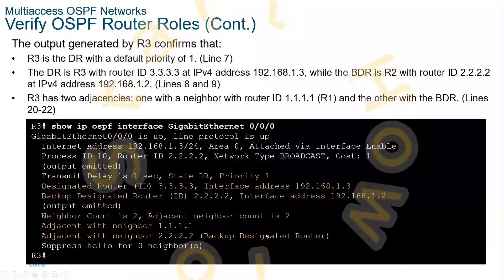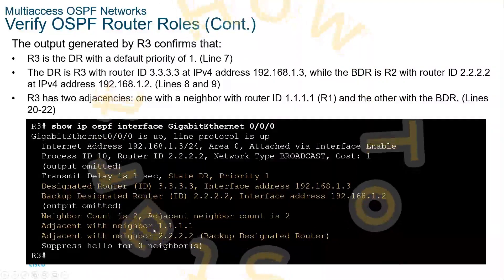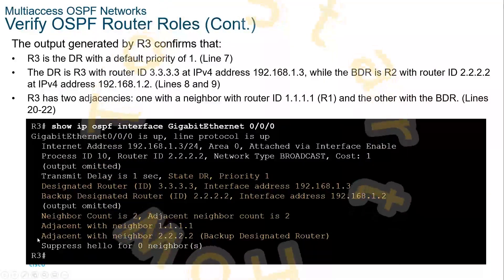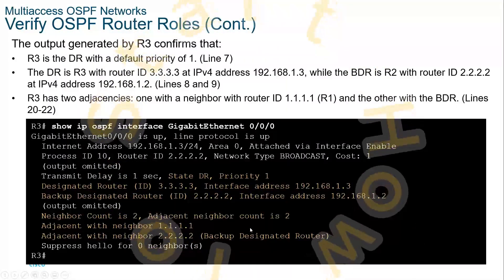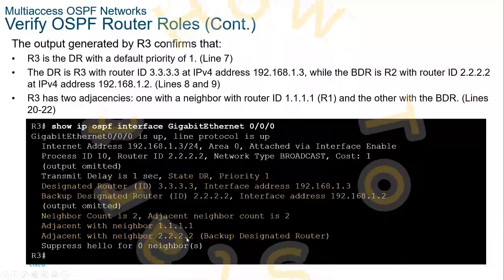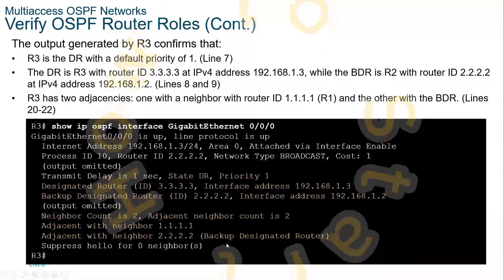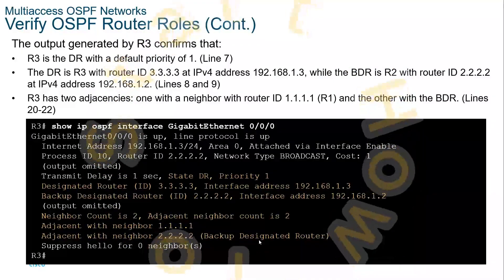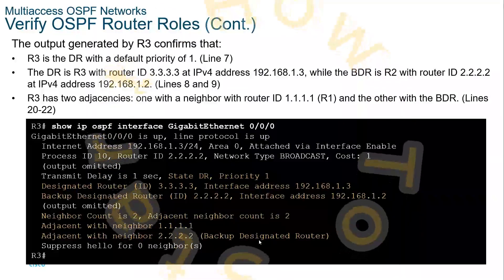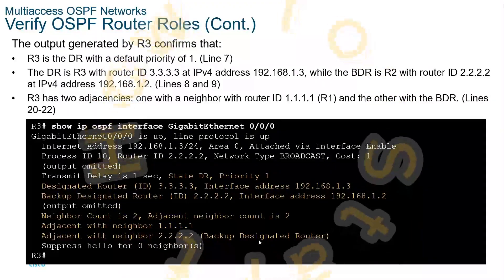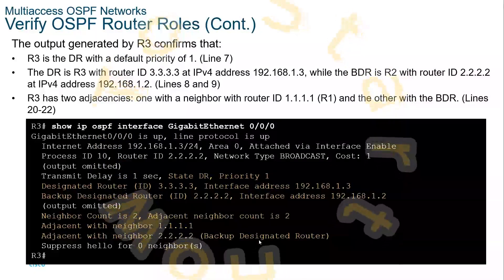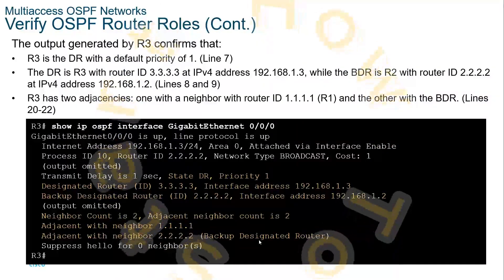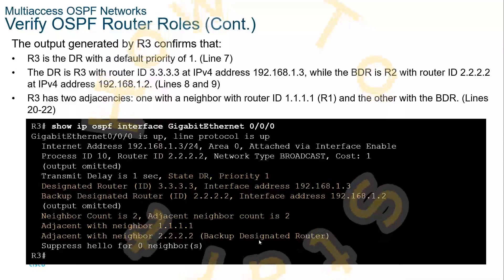If we look at R3, it is connected to R1 and R2. It will list the designated routers, the backup designated routers, and the adjacencies with any important information. Here the neighbor 2222 is the backup designated router. So with show IP OSPF interface, you can see the router ID, router state, priority, adjacencies, and which routers are classified as the DR and BDR.